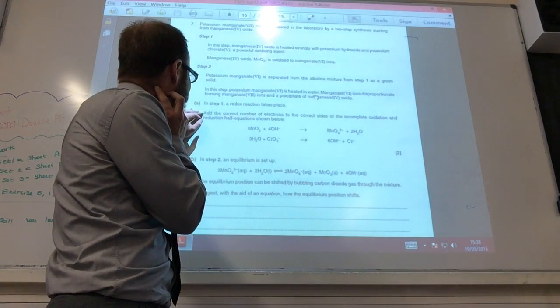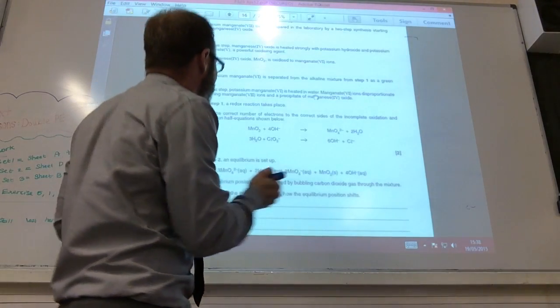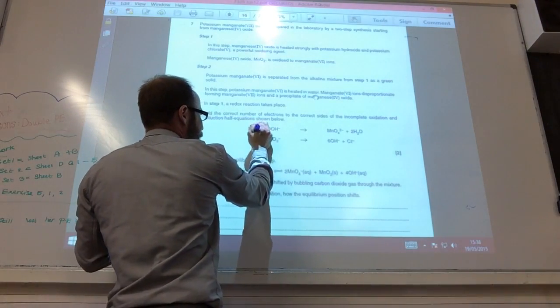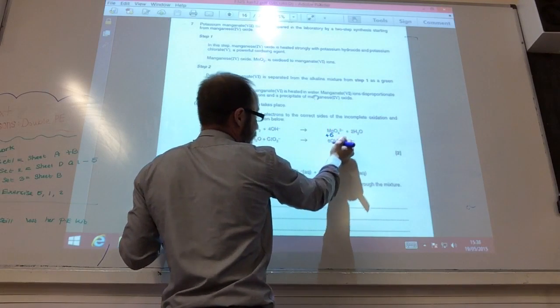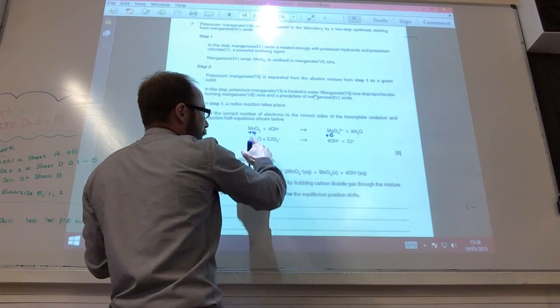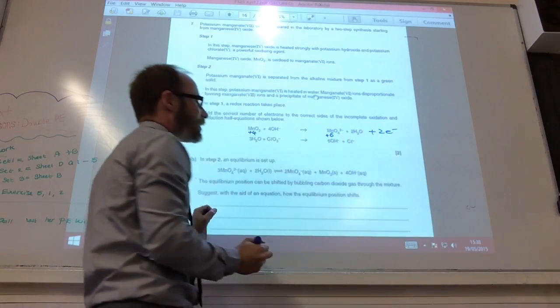Step one of the redox reaction takes place. We need to add the correct number of electrons here. So let's figure this out. Manganese there is in plus 4 oxidation state and there is in plus 6 oxidation state. So it's changed by 2. So it must have lost 2 electrons there.